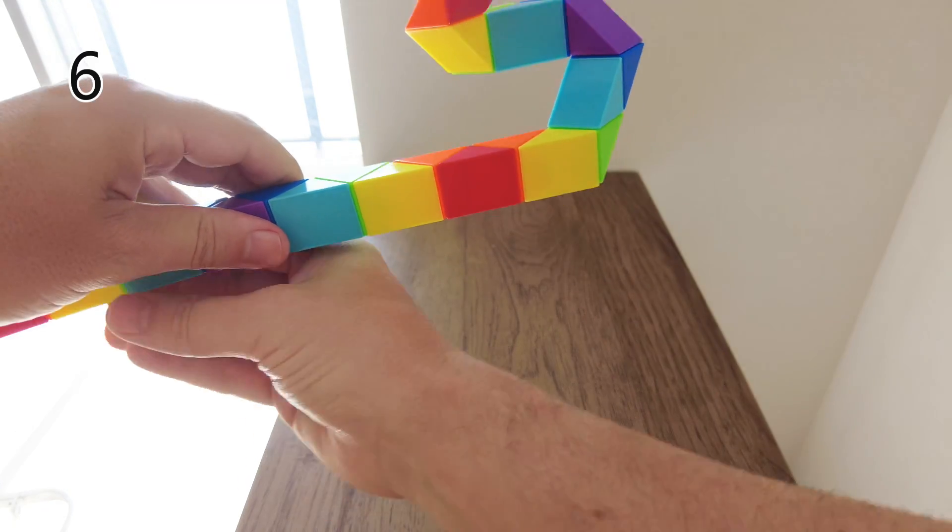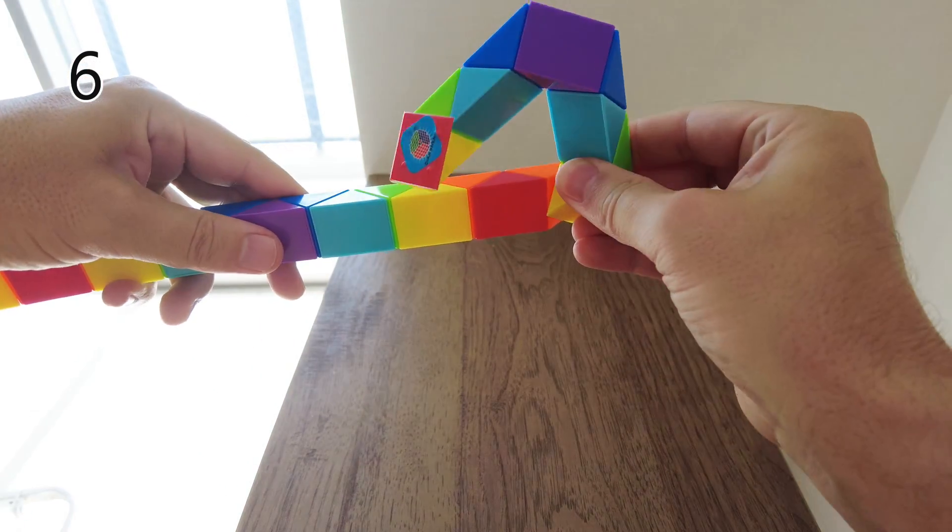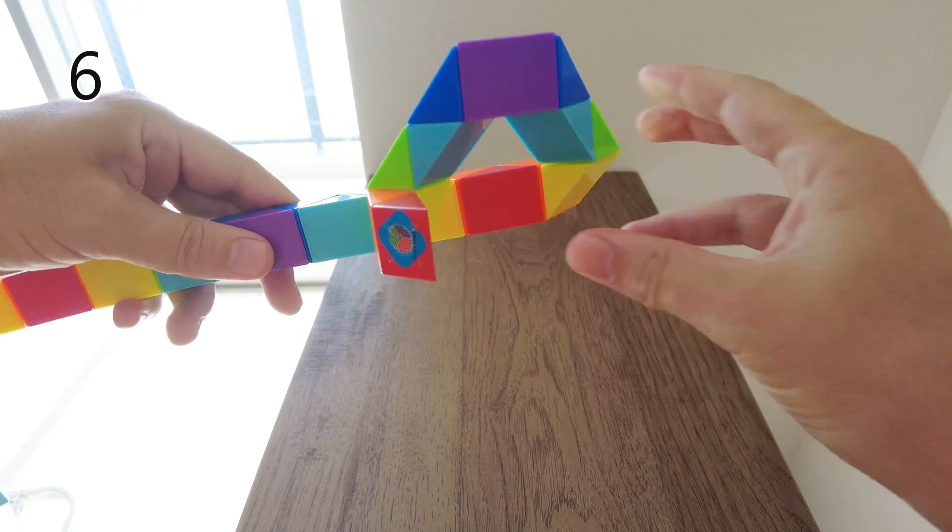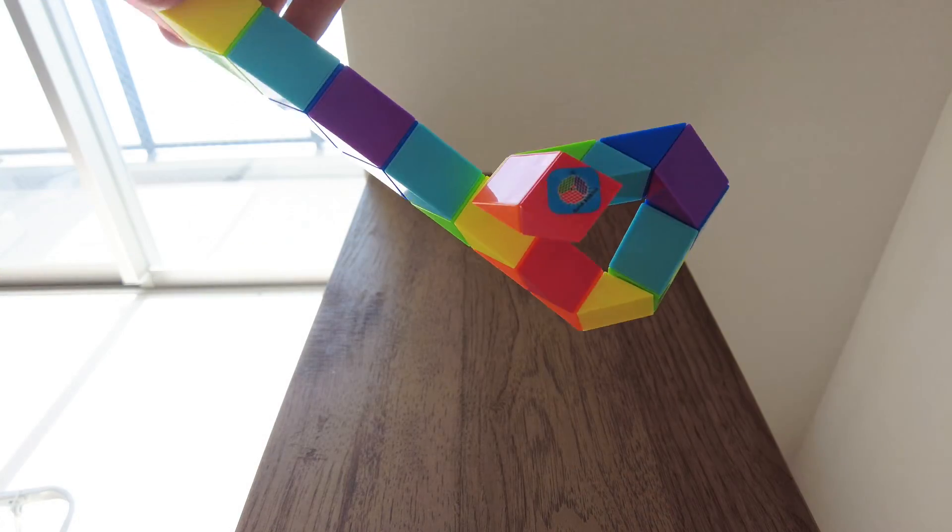Now, this join, you bend it this way, so it comes over. Like that. Let's turn it up this way.